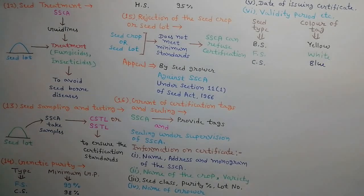The color of the tags for breeders, foundation, and certified seeds shall be yellow, white, and blue respectively.